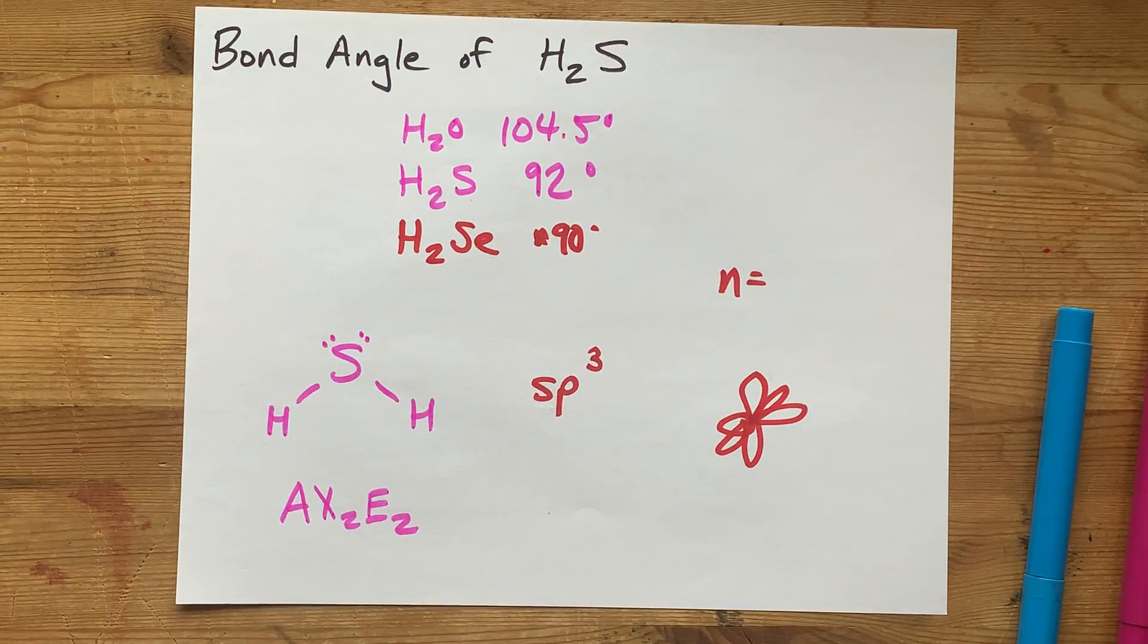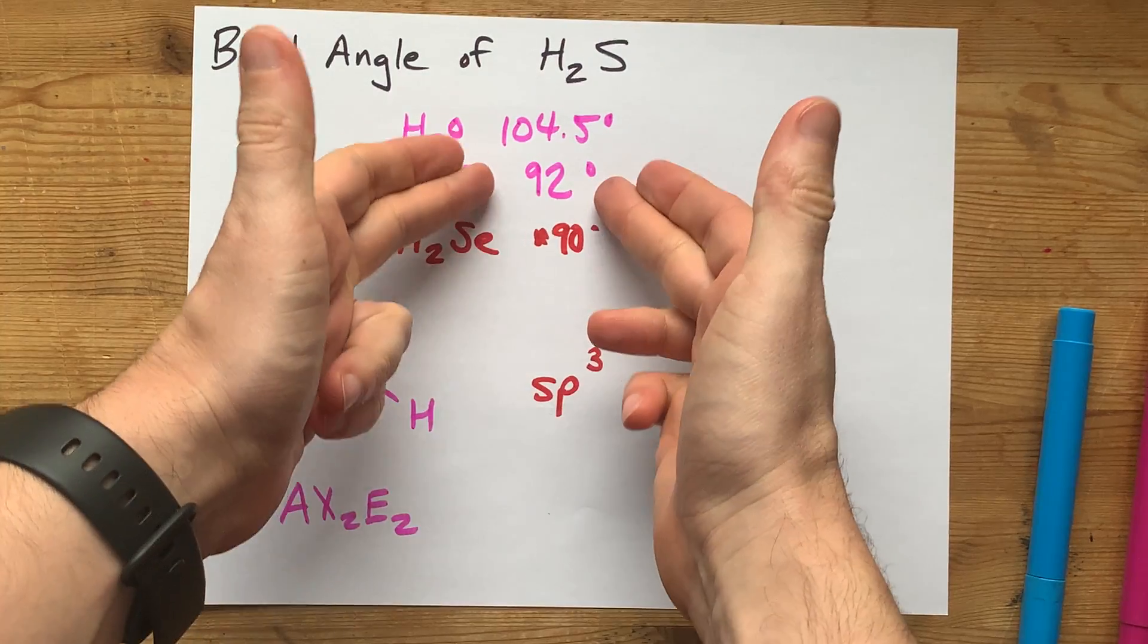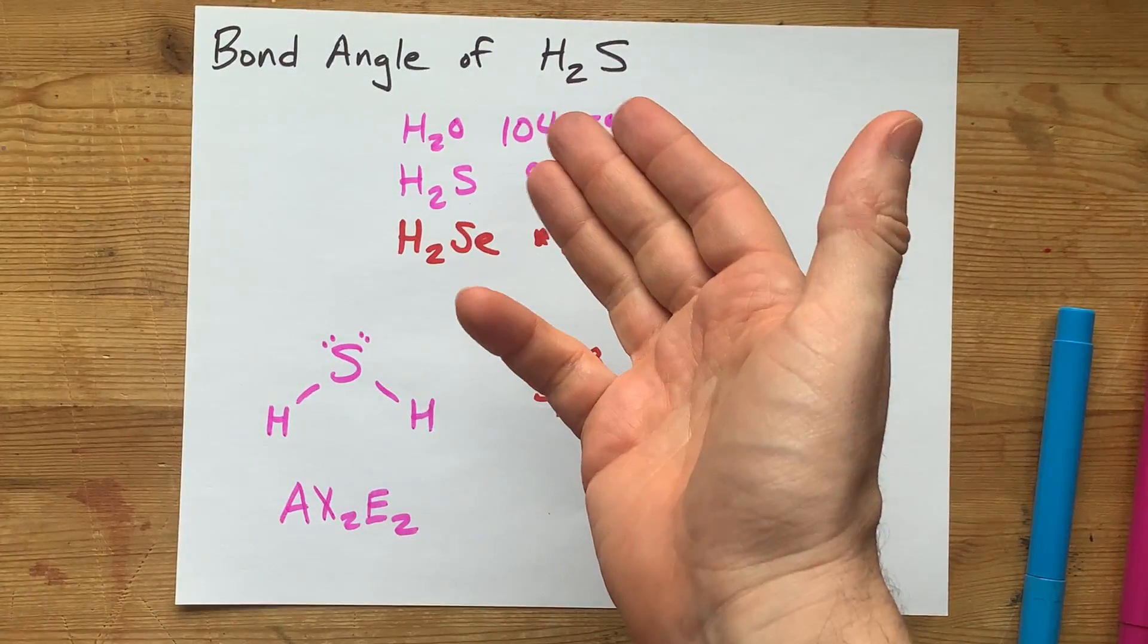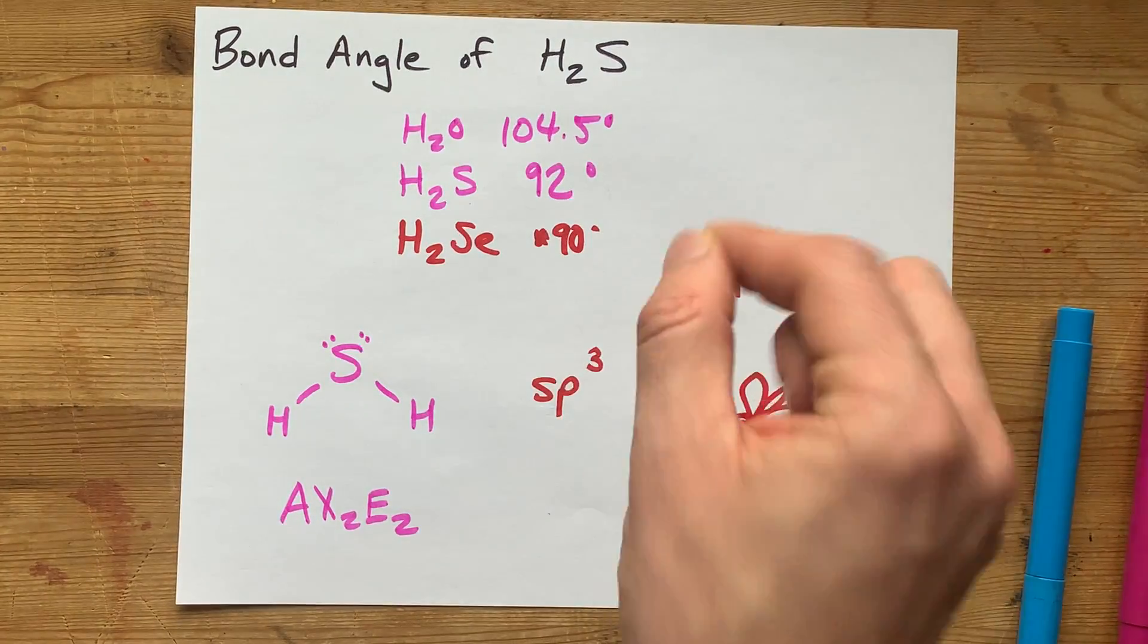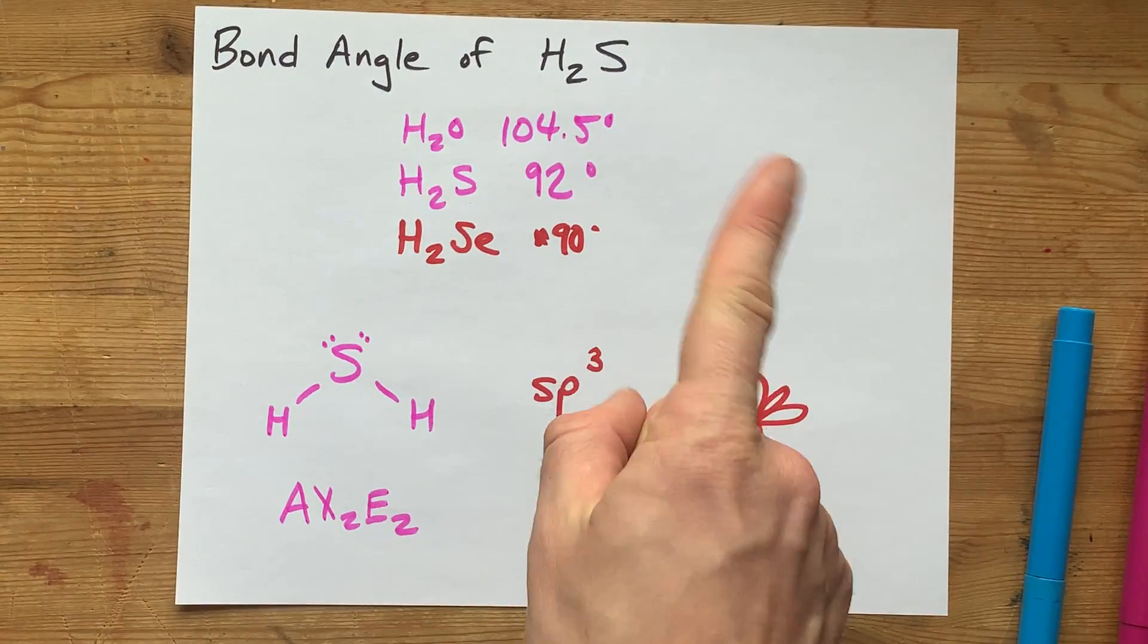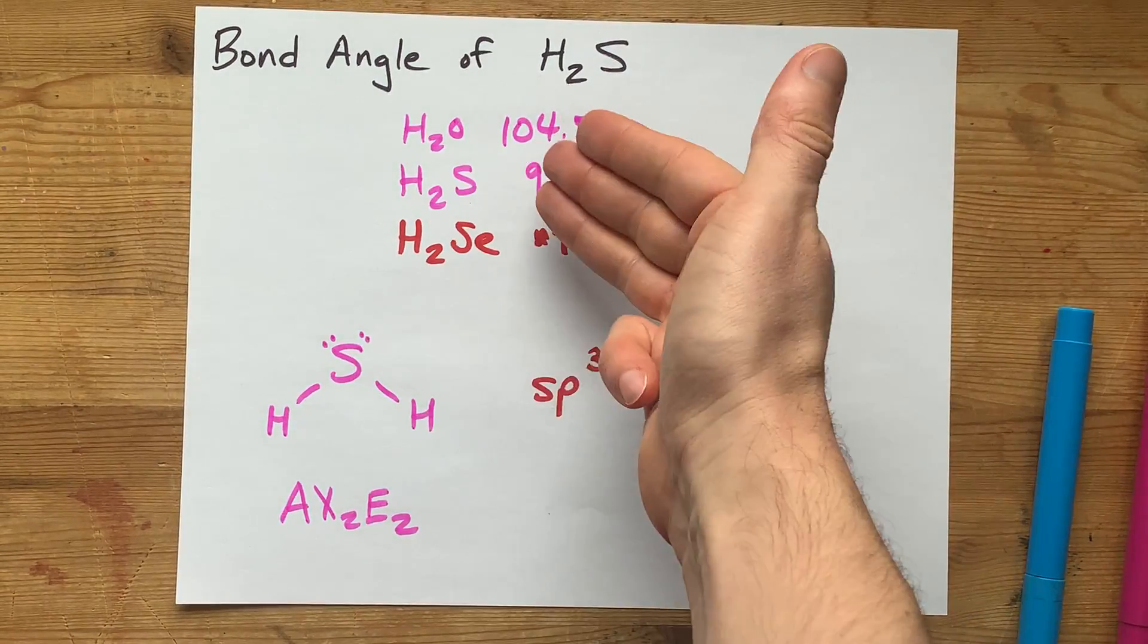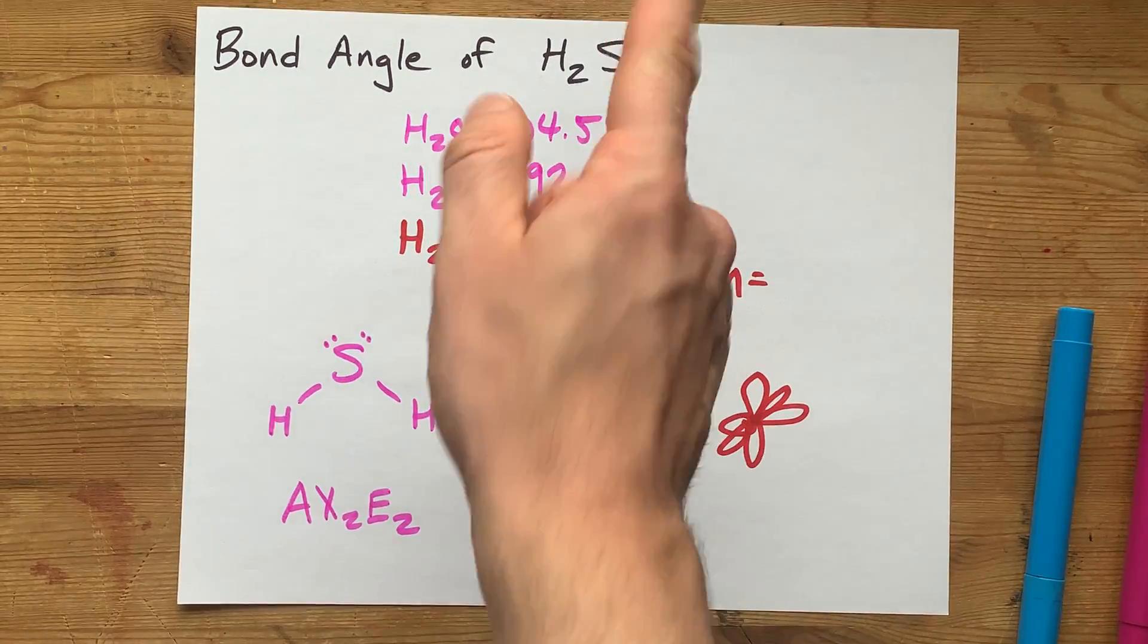I hope that made sense. That's two different ways to think about why this number is so much different than the one for H2O, despite the fact that these are all in the same group. And again, if you're doing introductory chemistry, 104.5 is a very valid guess. The true answer is 92 for the reasons that we explained earlier. Thanks for sticking with me and best of luck.